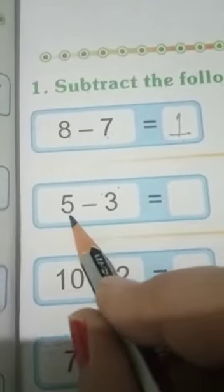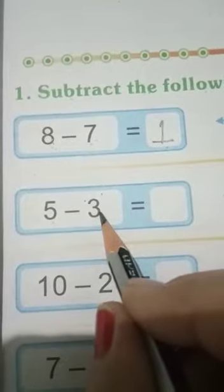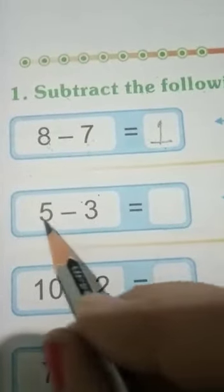8 minus 7 is equal to 1. Next we have to do 5 minus 3. Now you will go from 0 to 5.